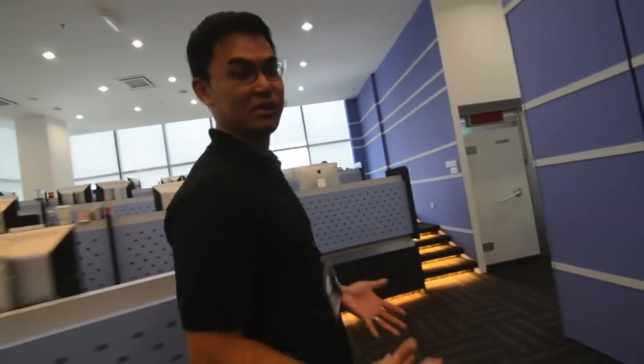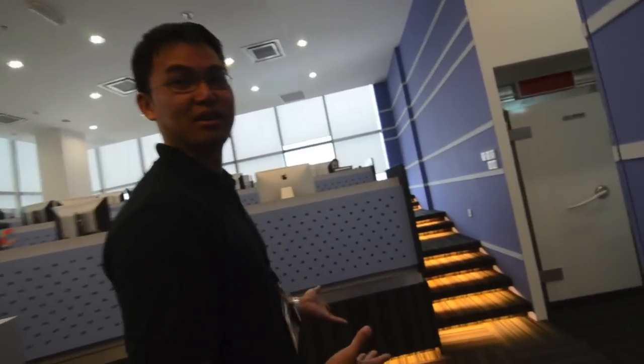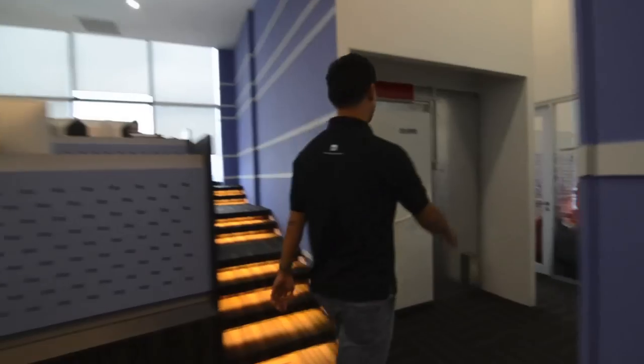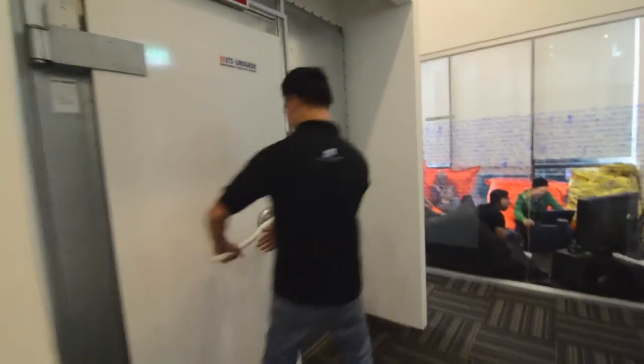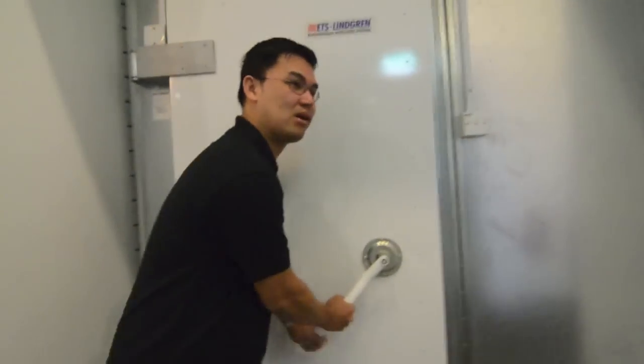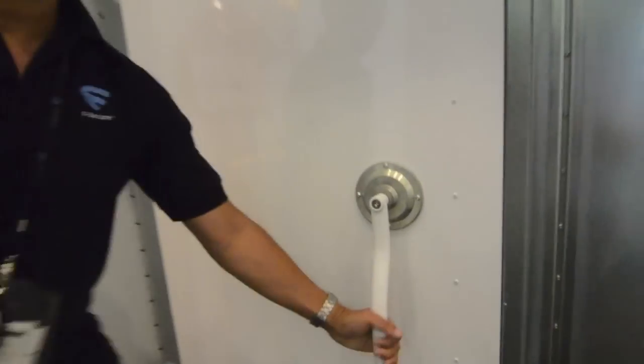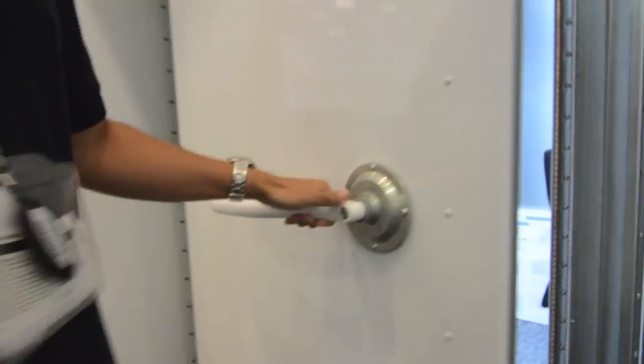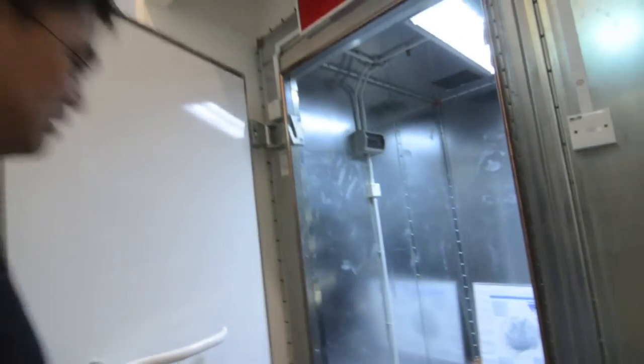One of our key facilities here is what we call the radio frequency lab. In this lab we actually test and execute malware without leaking it to the rest of the world, because this room is interference protected. This massive door is fully lined with lead and opens into this room.